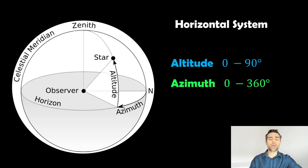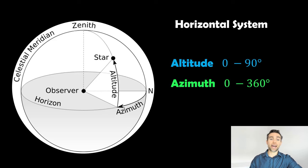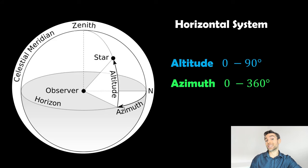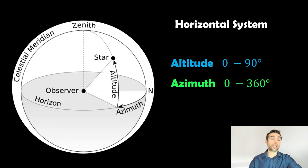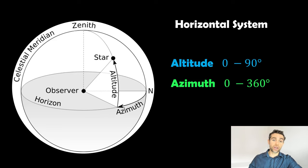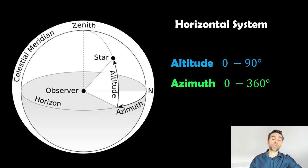The horizontal system basically assumes that we're on the surface of the Earth. We have the horizon, and anything above the horizon is going to have an altitude position of between 0 and 90 degrees. Then the angular position as we rotate around gives us an azimuth position of between 0 and 360 degrees, and that gives us the location in the sky. We're not going to have an altitude below the horizon because we can't see it. So that's basically the horizontal system.